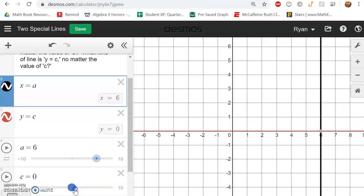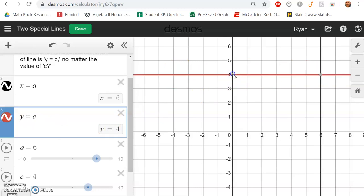If I change the value of c to be 4, well, it's the horizontal line y equals 4 that crosses the y-axis at 4, at the point 0, 4.